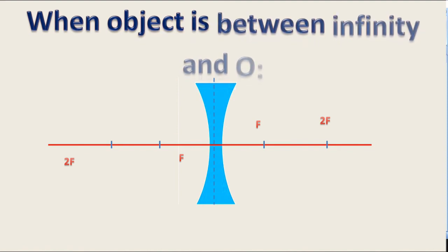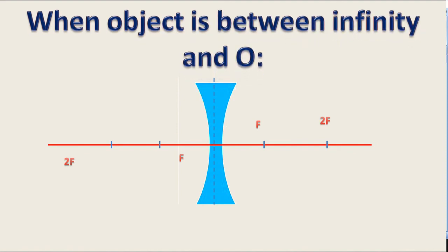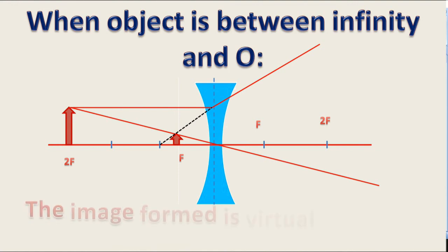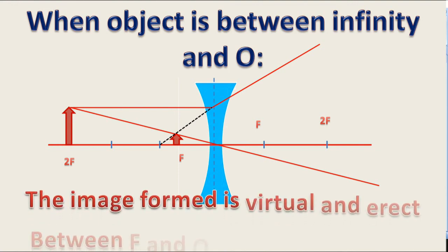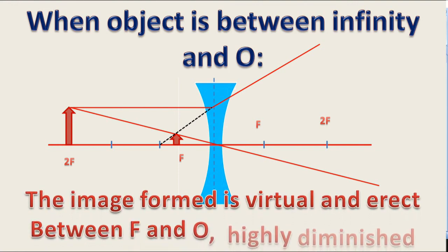When the object is between infinity and O or optical center, the light coming from the object diverges from F and the image is formed between F and O. The nature of image is virtual and erect. It is formed between F and O and highly diminished in nature.